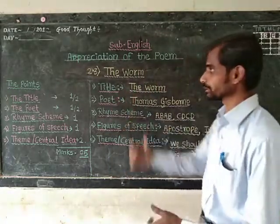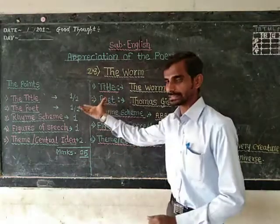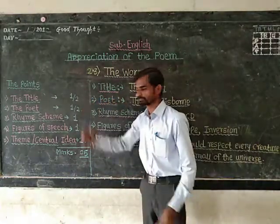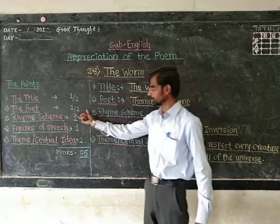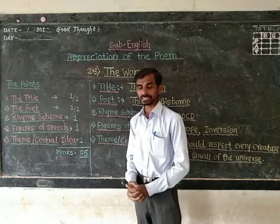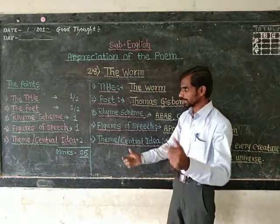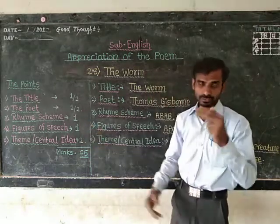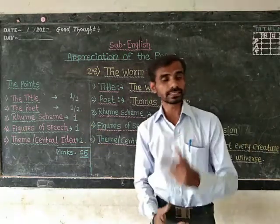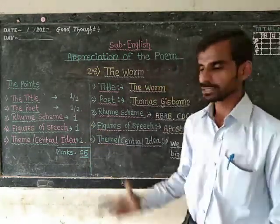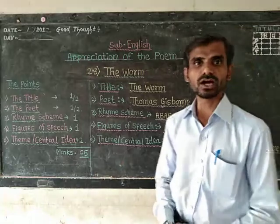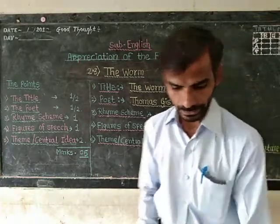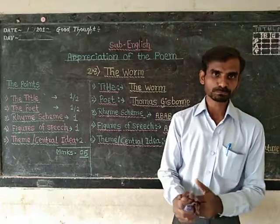Let us go through the points that are on the blackboard. Title, which carries half a mark. The poet of the poem, once again it is for half a mark. Rhyme scheme of the poem, it is for one mark. Figures of speech, it is for one mark. And the central idea or theme of the poem, once again it is for one mark.